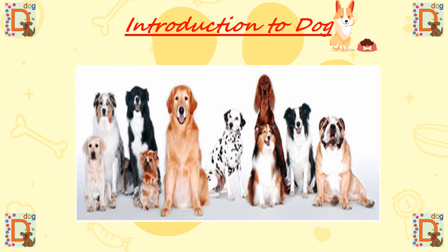Children, do you know there are various kinds of dogs? They are different in size and colors. Dogs are found in different colors like brown, white, and black, and some are in two colors as well. Can you see such dogs which are two colors over here in this picture? These are in black and white, and some are in white and brown together.